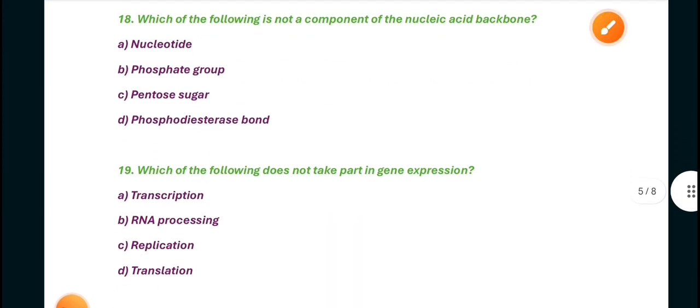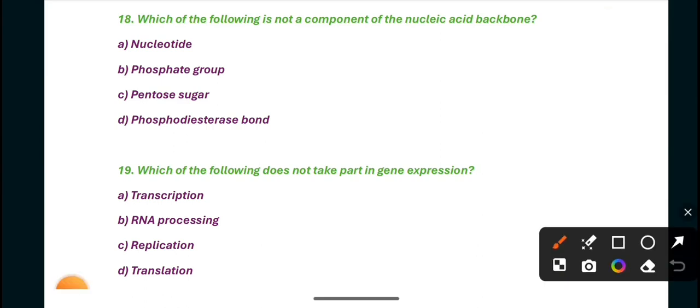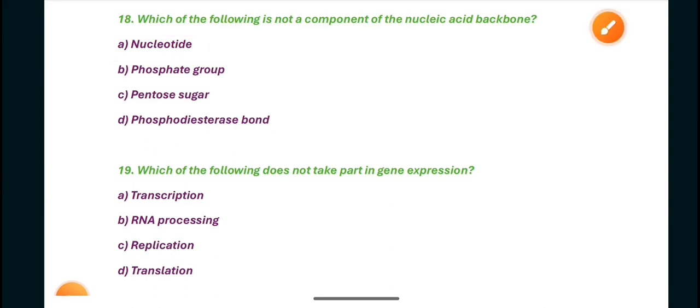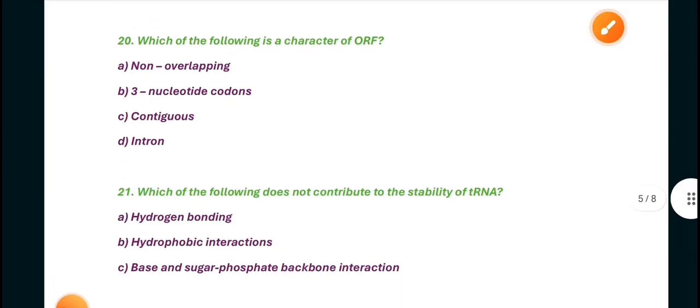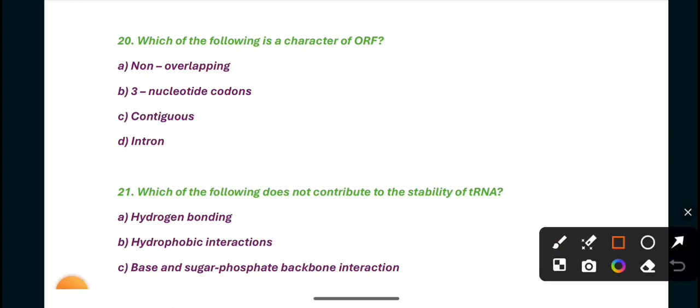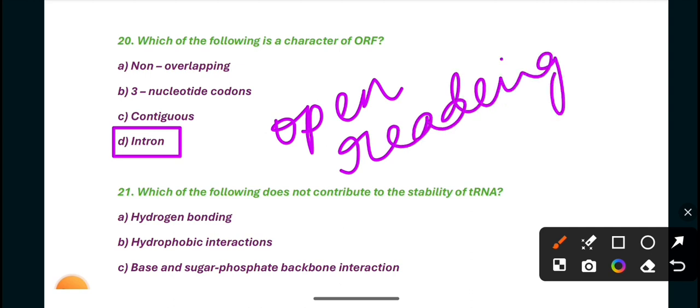Question 18: Which one of the following is not a component of the nucleic acid backbone? The answer is A, nucleotide. Question 19: Which of the following does not take part in gene expression? Then replication is the right answer. Next, which of the following is a character of ORF DNA? The answer is D, intron. The full form of ORF is open reading frame.